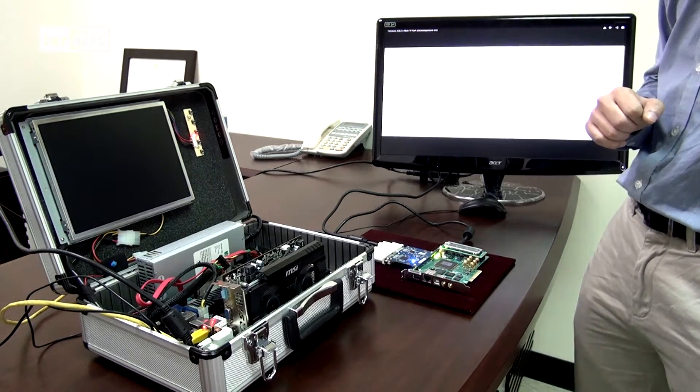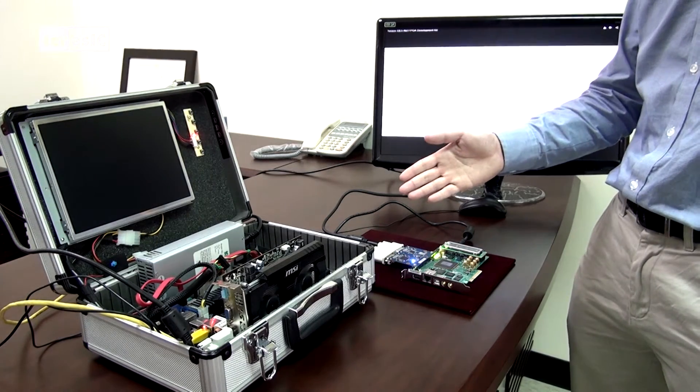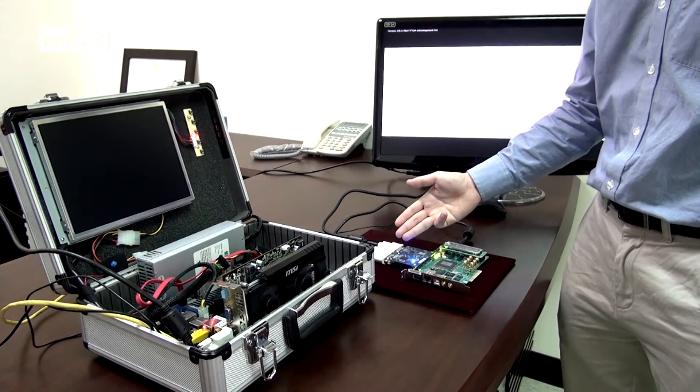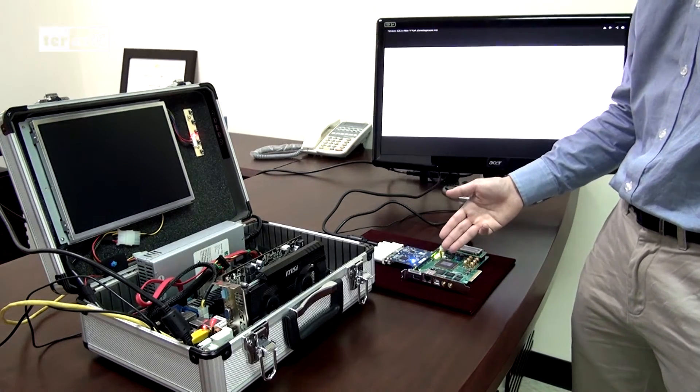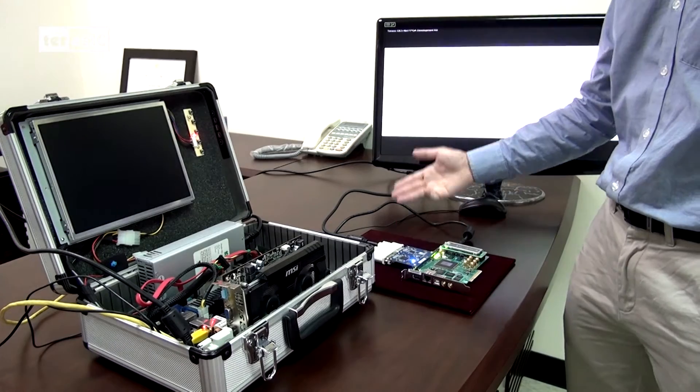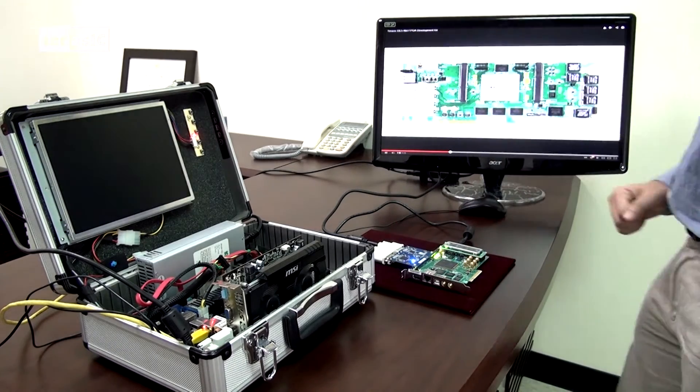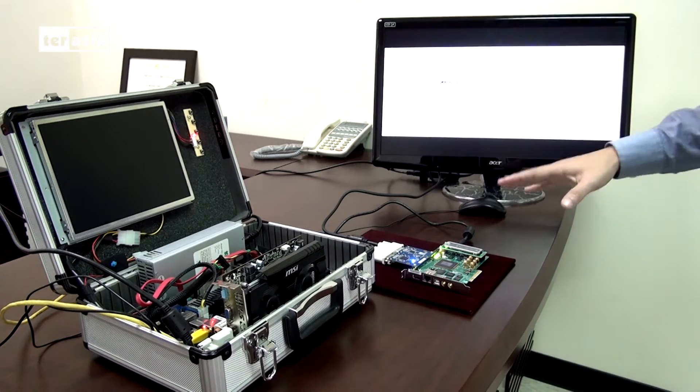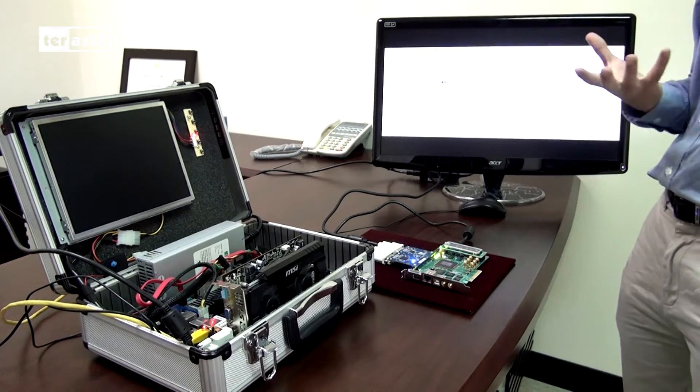And now we can see that we have our PC transmitting our video signal out into the DVI-RX port of the daughter card, through the FPGA, and out through the TX port again to our monitor. We can see we have our video feed coming in successfully through the FPGA for us to do even more image processing.